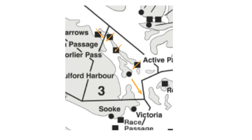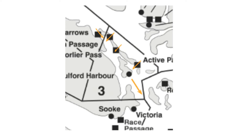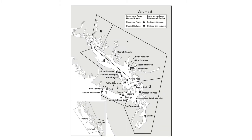There are also other passes through which there can be a lot of current. For example, when the tide is flooding, there's a lot of water that has to get through First and Second Narrows to fill up the entire Indian Arm, or empty it out again when it's ebbing. All the primary current stations are marked in this picture as small black squares.